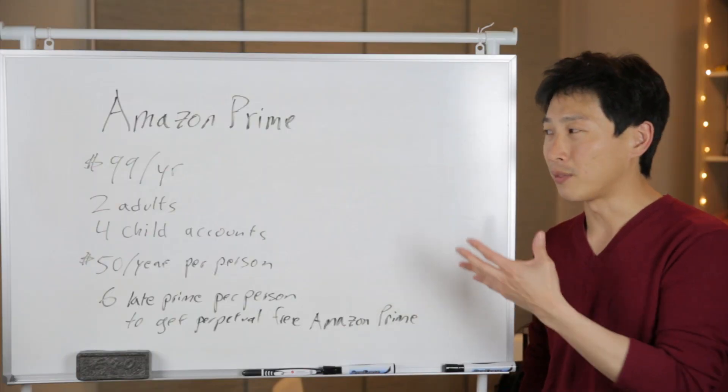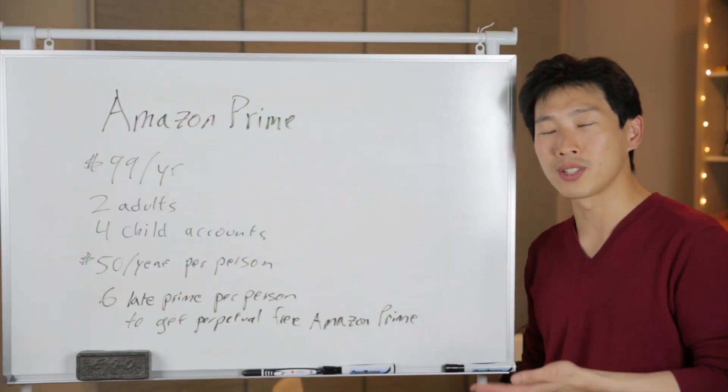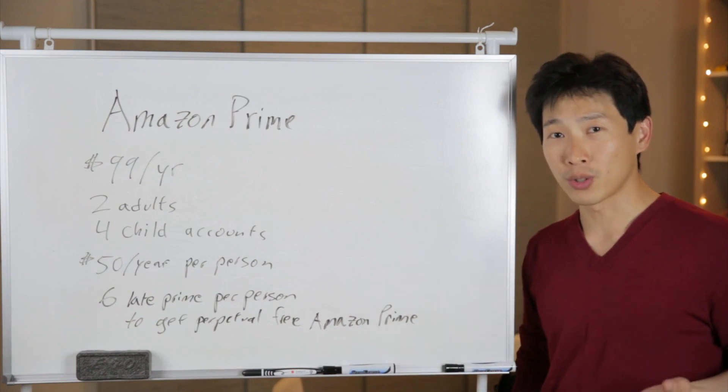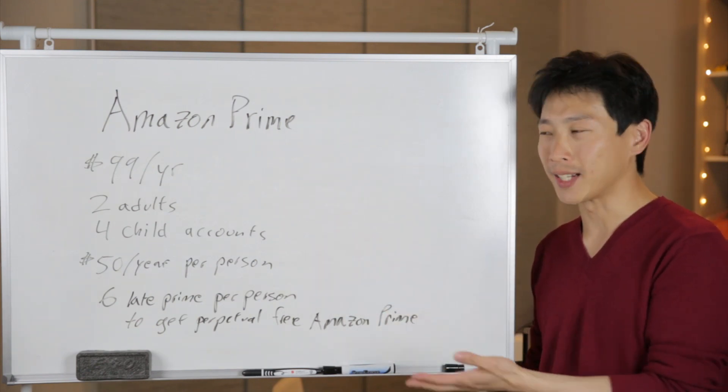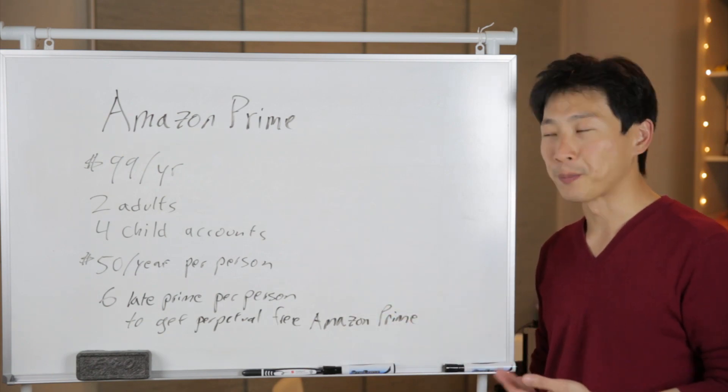Now, this doesn't make sense to have two other adults in the same address because you can just have one person keep on ordering everything for the household. The four child accounts that you can have actually cannot order anything. They can use all the digital content and stuff like that, though.